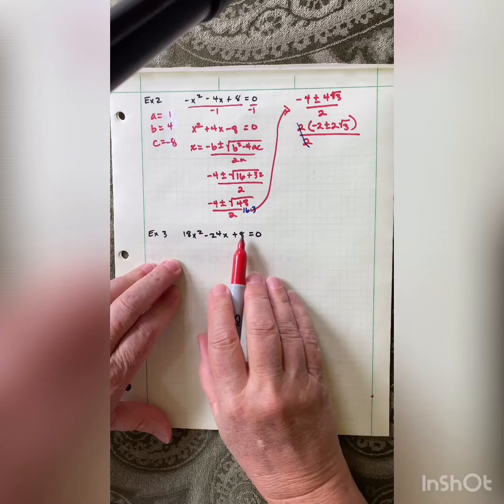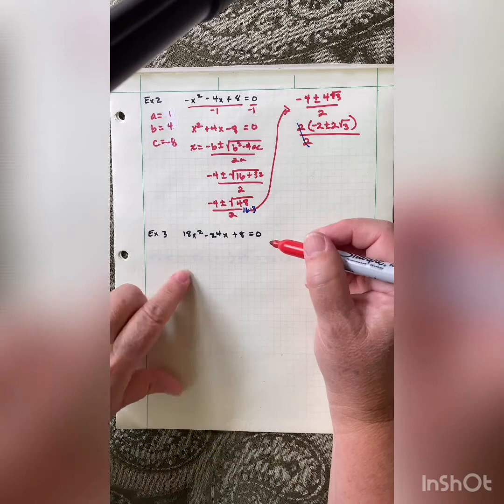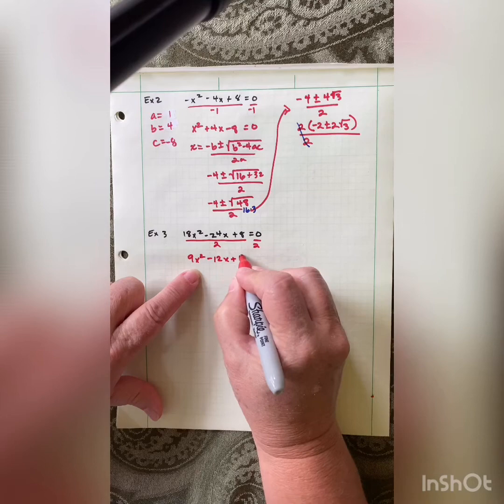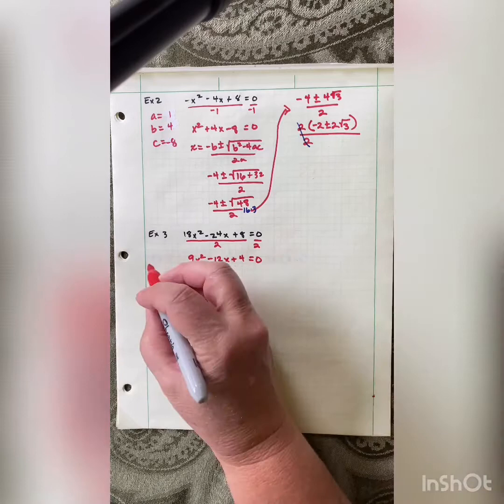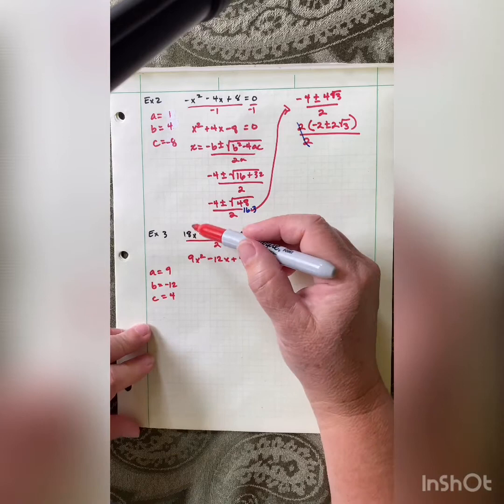This next one has a common factor in all terms. I can factor out — in this case — 2. So we divide both sides by 2 and get 9x squared minus 12x plus 4 equaling 0. Now identify a, b, and c: a equals 9, b equals negative 12, c equals 4. You could use the original bigger numbers, but that means putting larger numbers into the quadratic formula, which makes it harder. Smaller numbers are better.